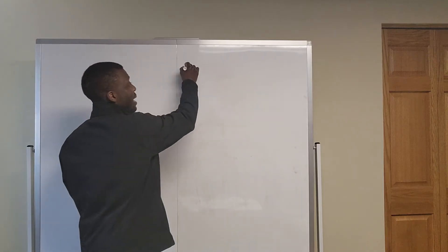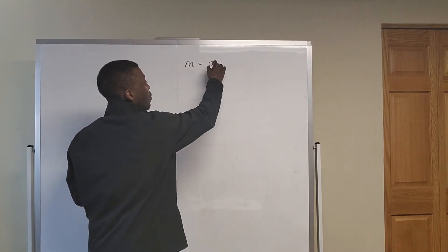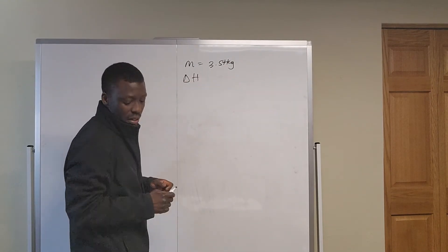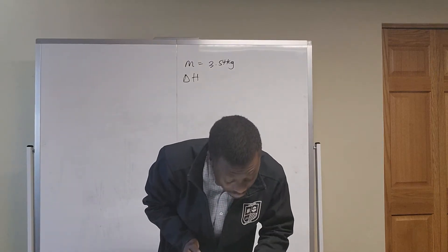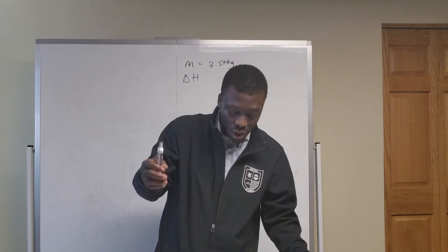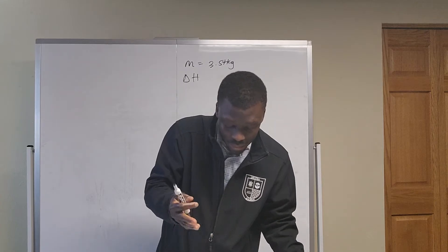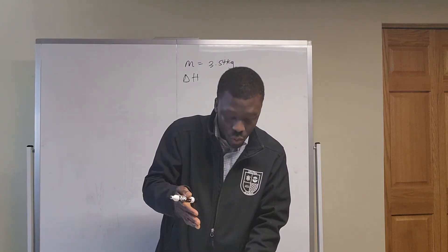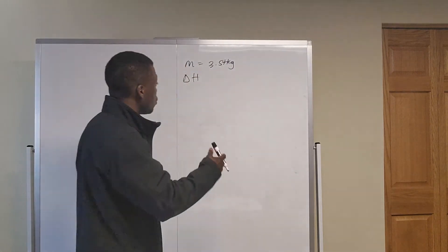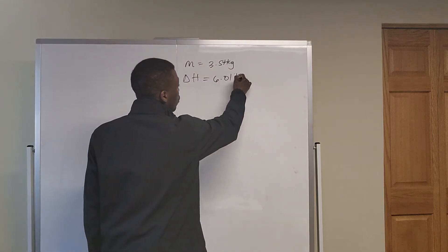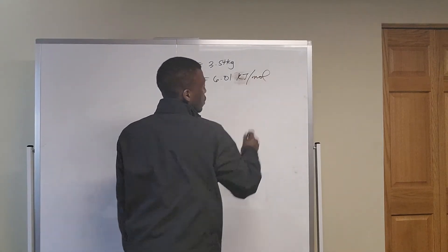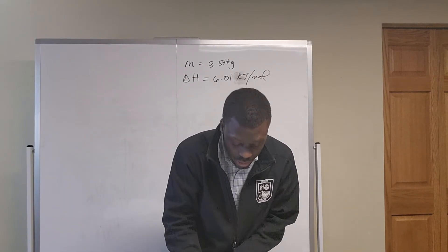In example 15.1, we write down the mass that we've been given — 3.54 grams. We write down the delta H that was given, which is the enthalpy of fusion. We find that using charts and tables, which are available to us. In this case it's 6.01 kilojoules per mole. You go to your table for the enthalpies of fusion and vaporization and use that value given to you on page 359.